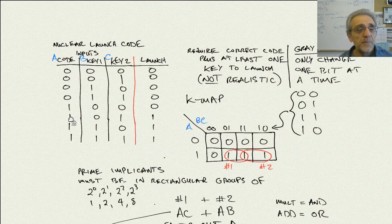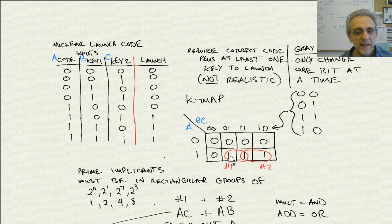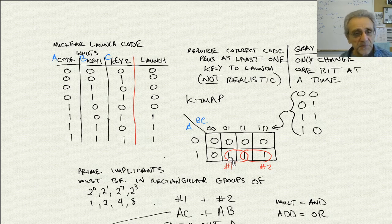For example, with the row 1, 0, 1 — if we go over here to 1, 0, 1 — here's the output and it's a 1. After doing that, we have to circle the prime implicants.